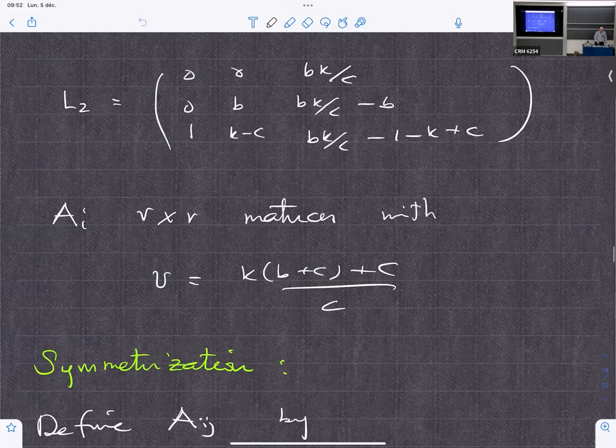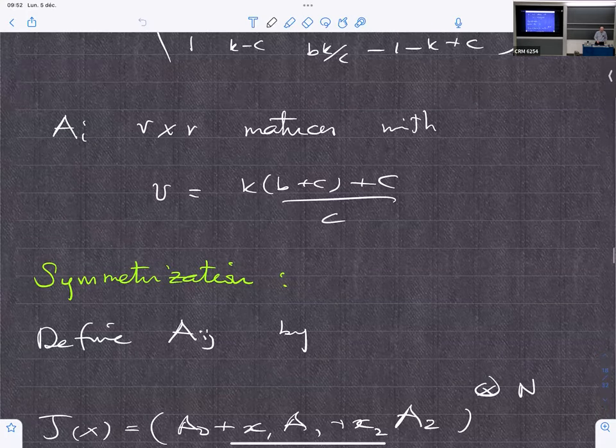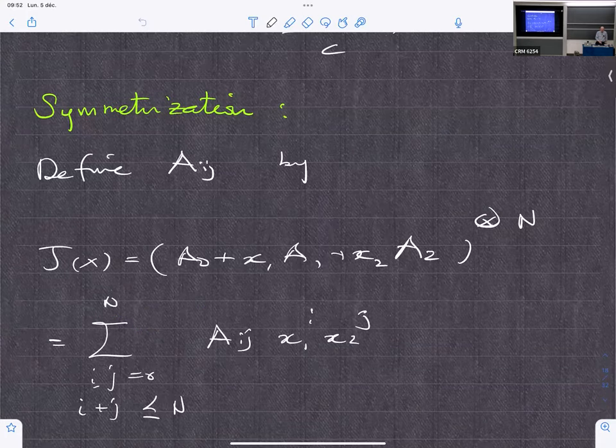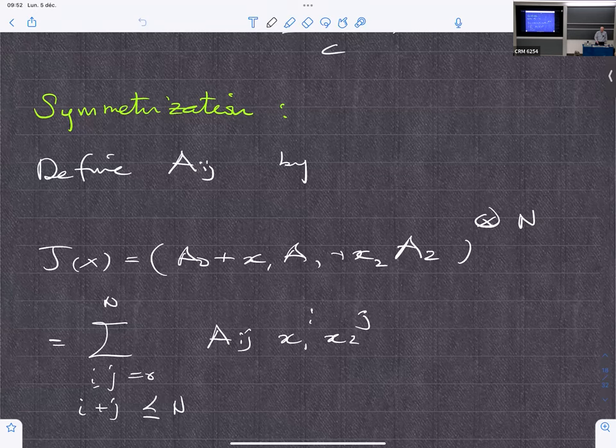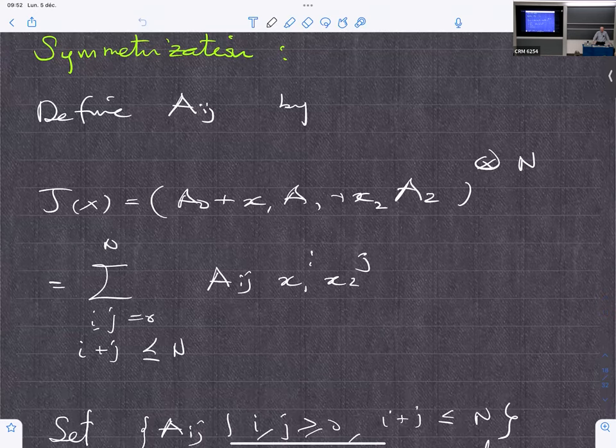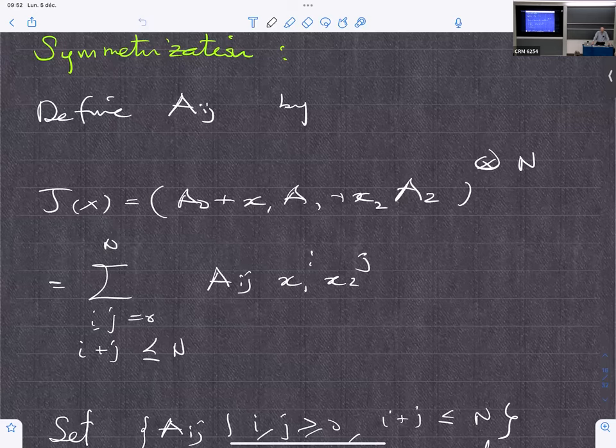A more interesting example is if you take the strongly regular graphs, which are equivalent to association schemes with two classes, and you work it out so you can determine what are the intersection numbers in that case.